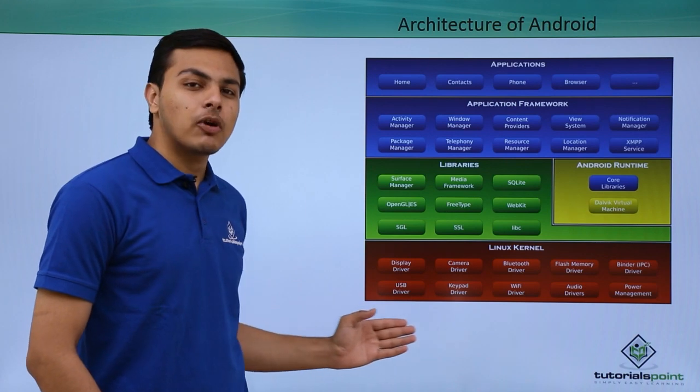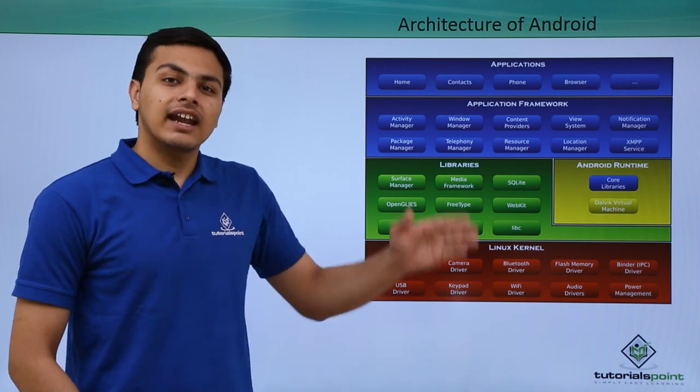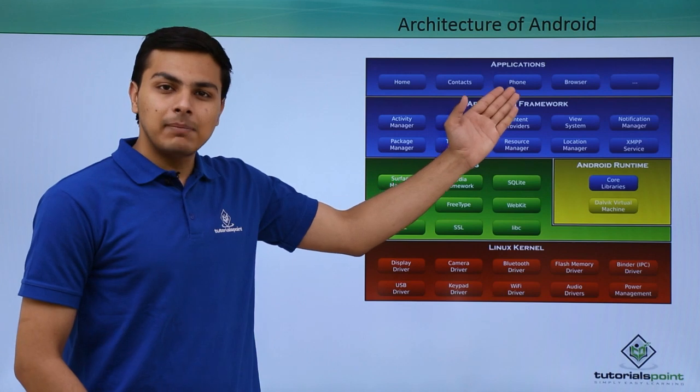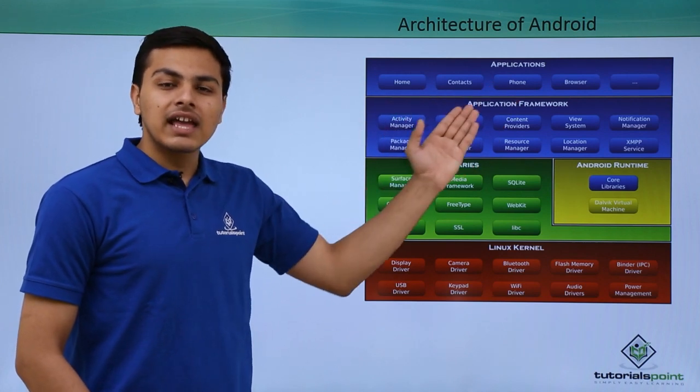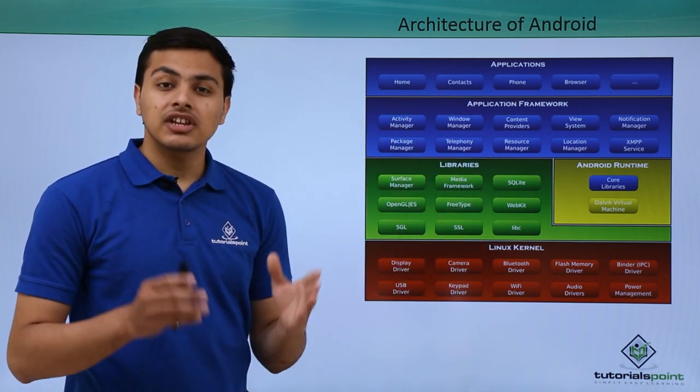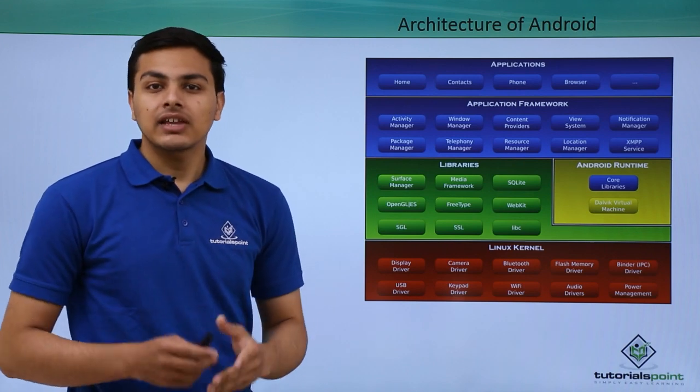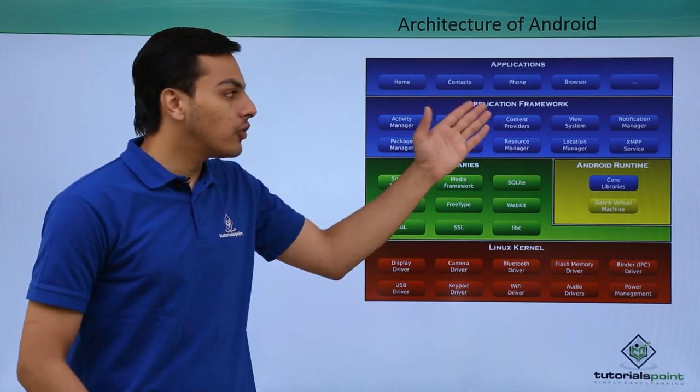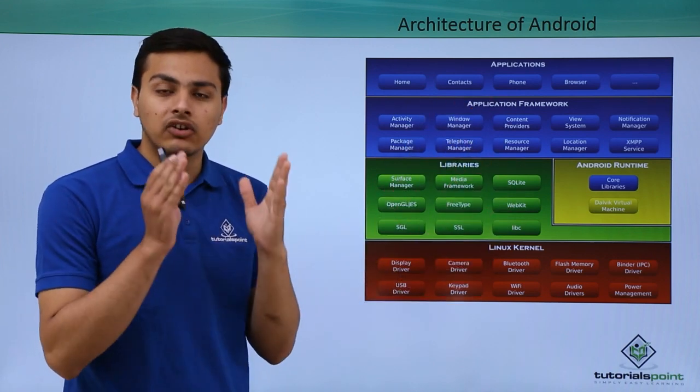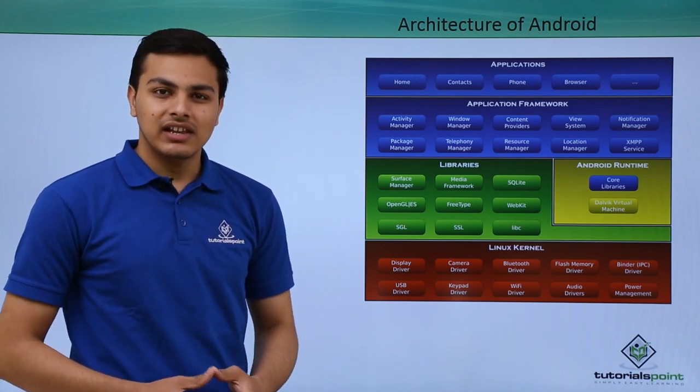You can see here that at the bottom, our first layer is Linux kernel, and at the top is the application layer. The application layer contains all the application UI—the interface like WhatsApp, Facebook, home, phone, browser. Everything we can see on Android is present in the application layer.